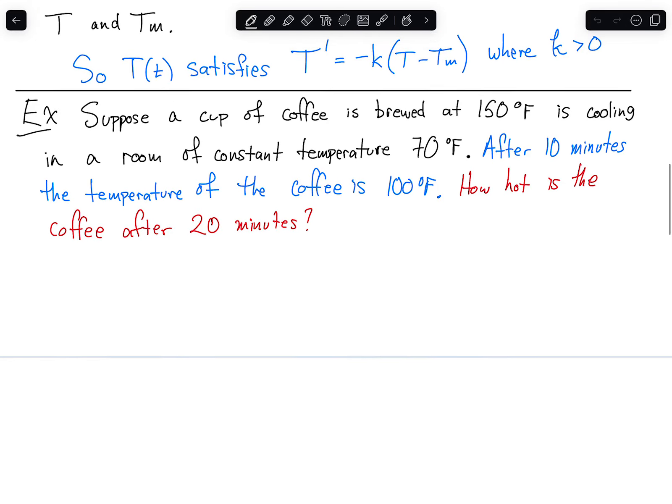Suppose a cup of coffee is brewed at 150 degrees Fahrenheit and is cooling in a room of constant temperature 70 degrees Fahrenheit. After 10 minutes, the temperature of the coffee is 100 degrees Fahrenheit. How hot is the coffee after 20 minutes? So let's take a record of what we know. So the initial temperature of the coffee, capital T, at T equals zero is 150 degrees Fahrenheit. We also know that Tm of zero is 70, and it continues to be 70. Tm of T is 70. The room temperature isn't changing.